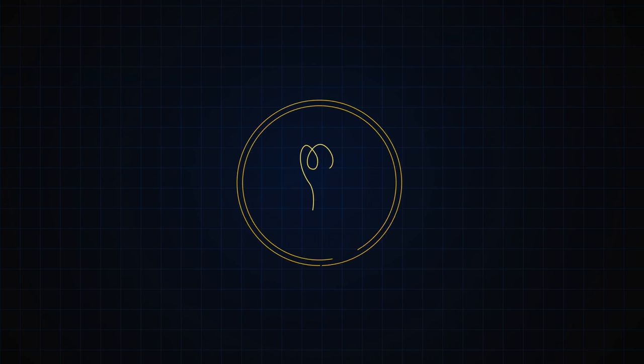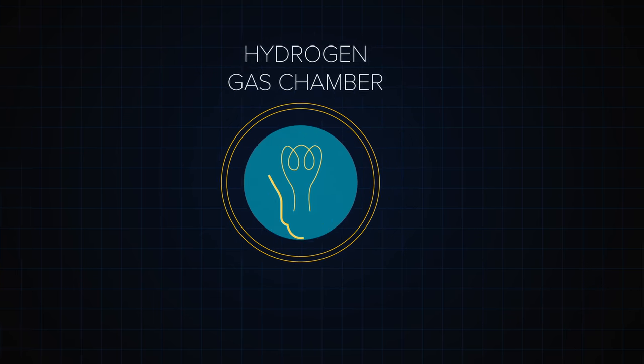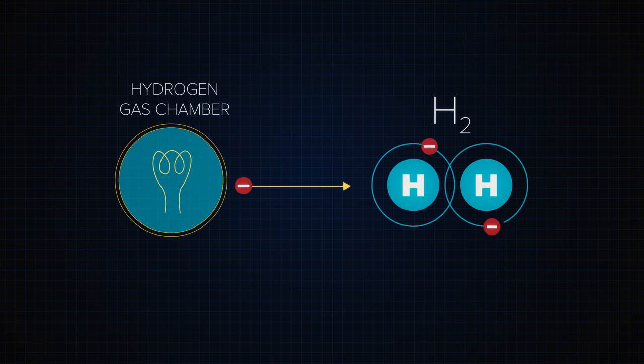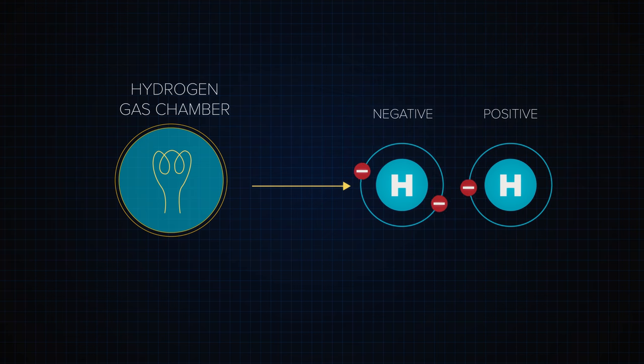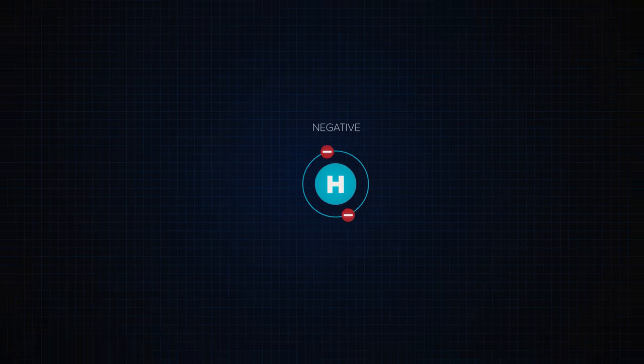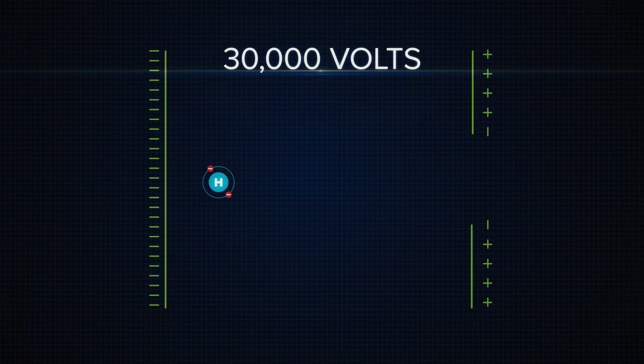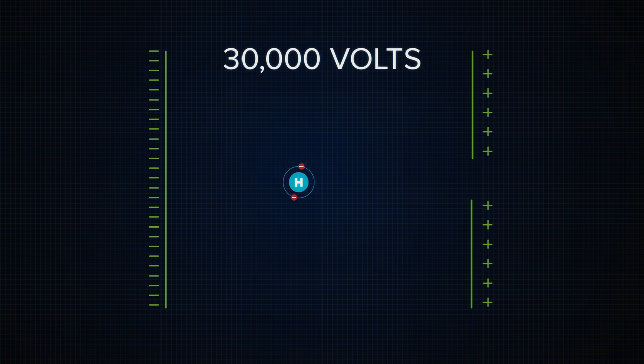The solution is a filament similar to the wire inside an old electric light bulb. Placed inside a chamber filled with hydrogen gas, the filament provides the electrons that turn neutral hydrogen molecules into negatively charged particles. A static electric field of 30,000 volts then gives the particles their initial propulsion for their journey through the accelerator.